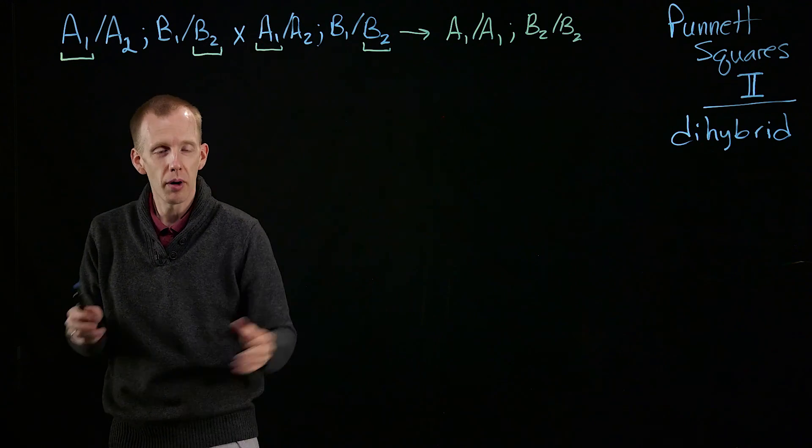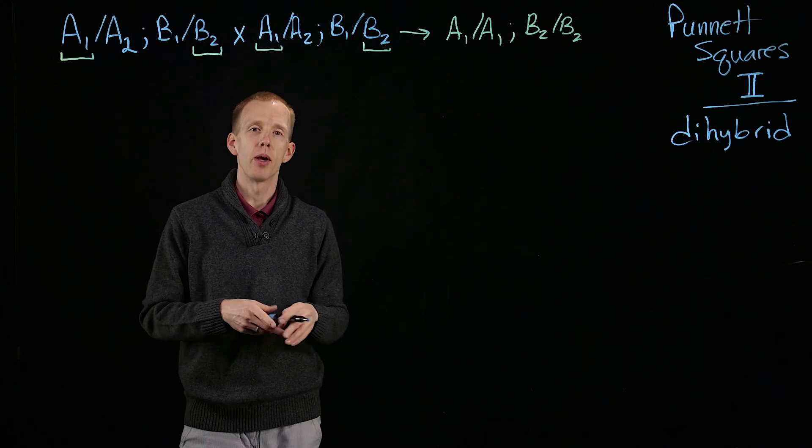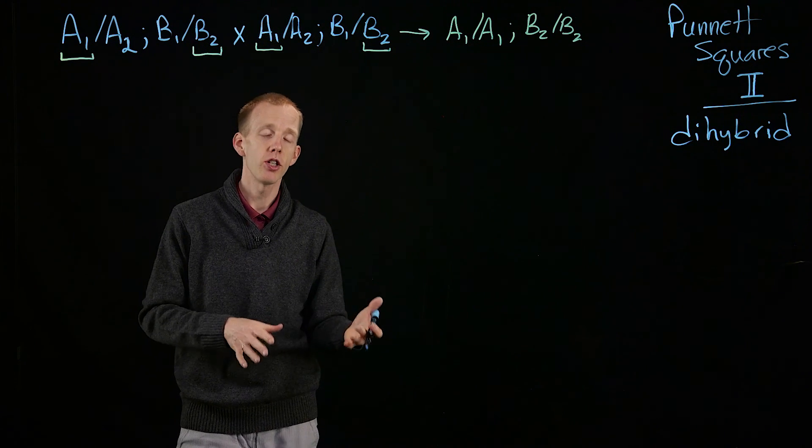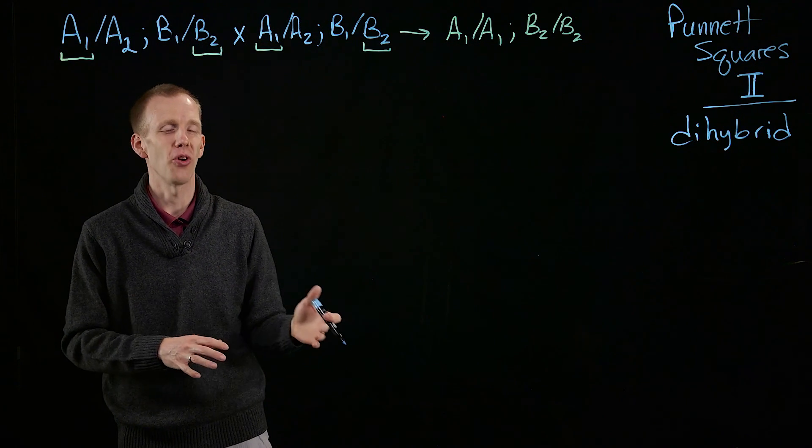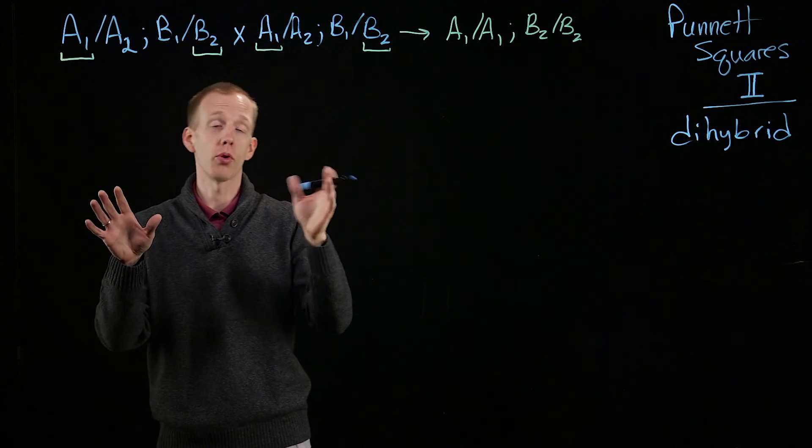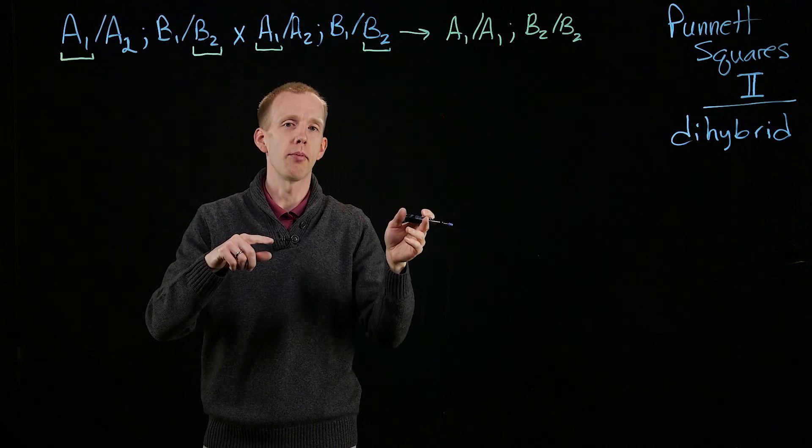And that's one of the main reasons to do Punnett squares at all, is to be able to predict the efficiency, or the best cross, the most efficient cross, to produce animals or plants of particular genotype combinations.